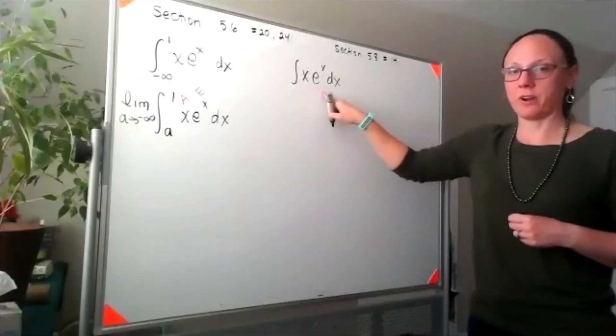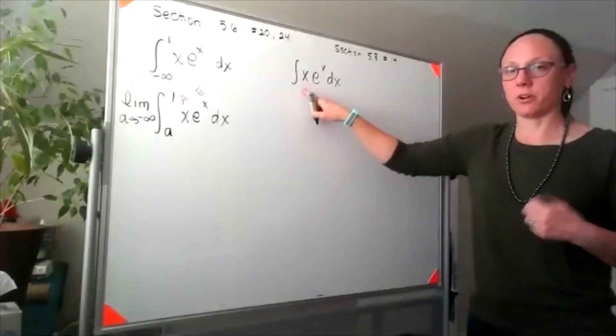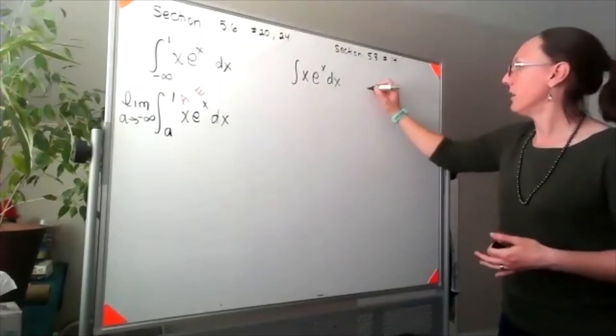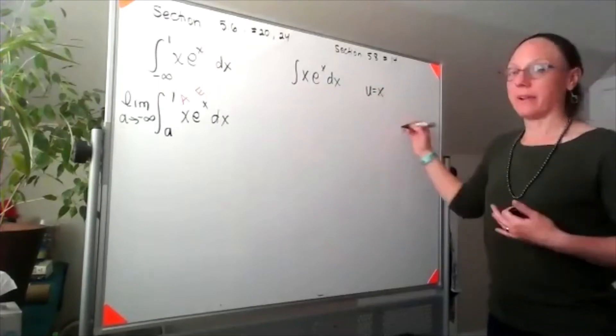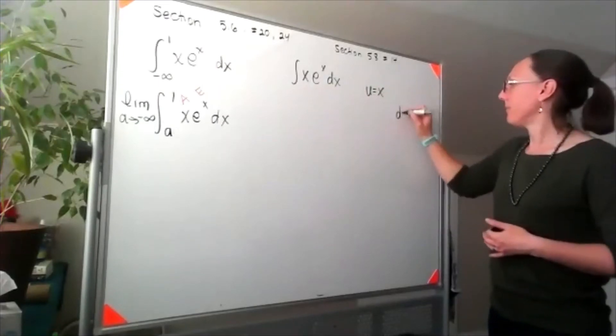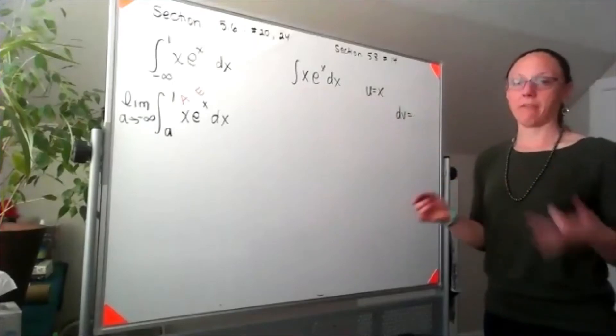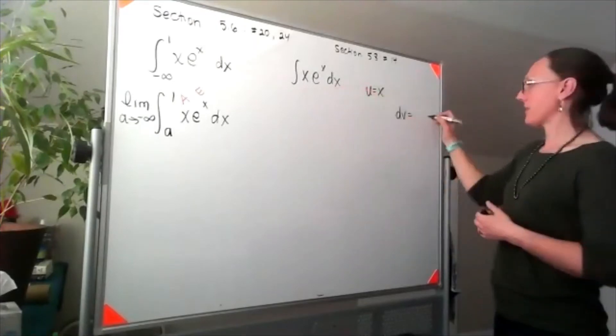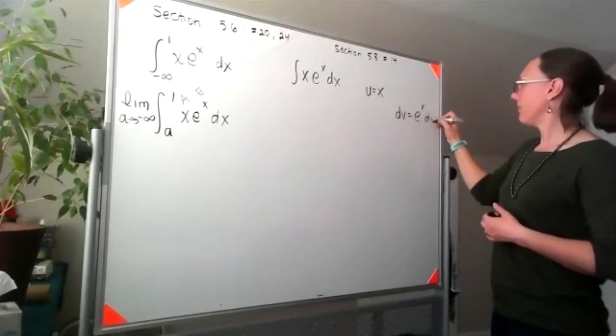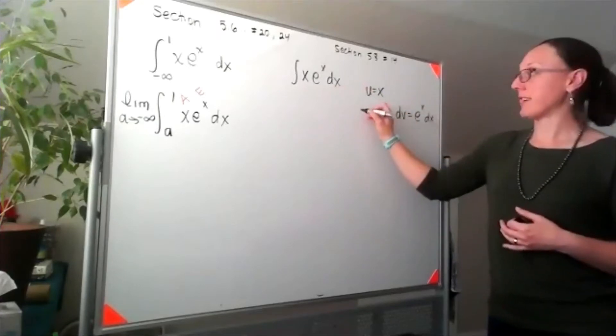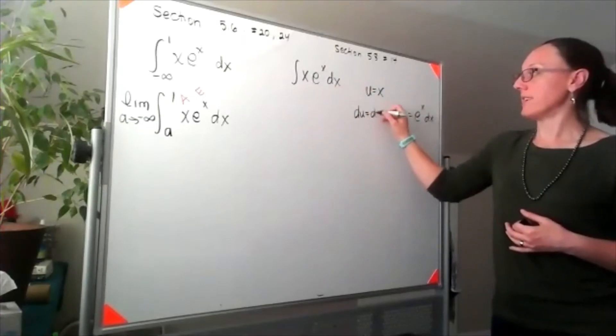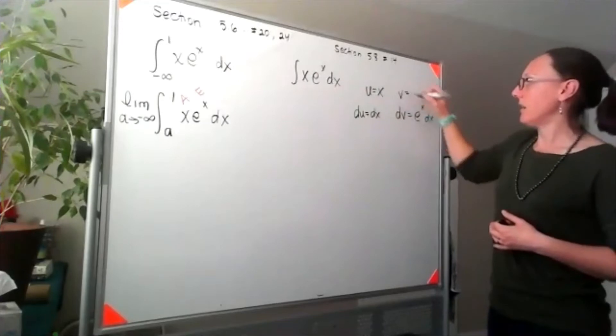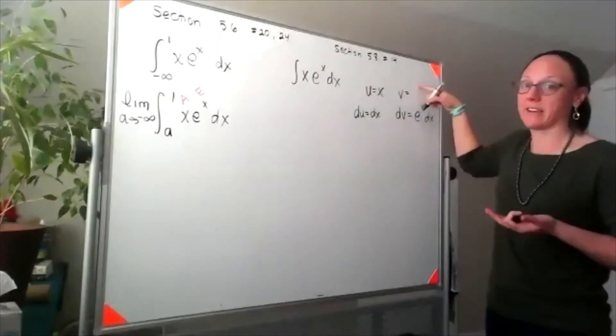Since I have a mixture of algebra and exponentials, algebra comes first in the word LATE. My u would be x, which makes dv everything else, e to the x dx. When I take the derivative of x I'll get du is equal to dx, and the antiderivative of e to the x is e to the x.